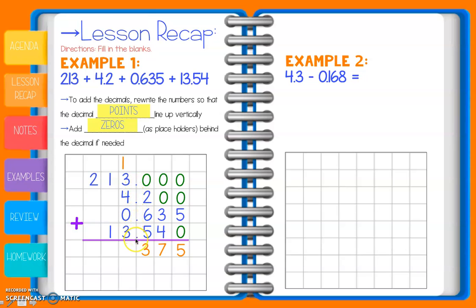As we're adding, with the decimal points all lined up, we just drop our decimal point straight down. Next column: 1 + 3 + 4 + 0 + 3 = 11, so put the 1 here and carry another 1. Continue adding straight down: 1 + 1 + 1 = 3, then 2 plus nothing is 2. So our final answer for this problem is 231.375.